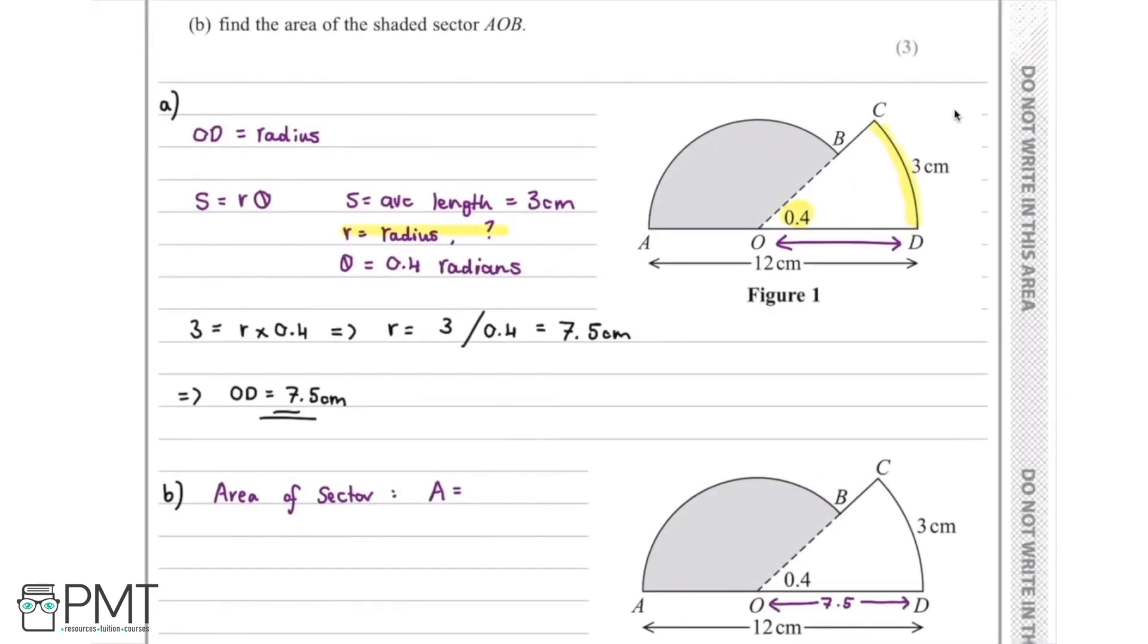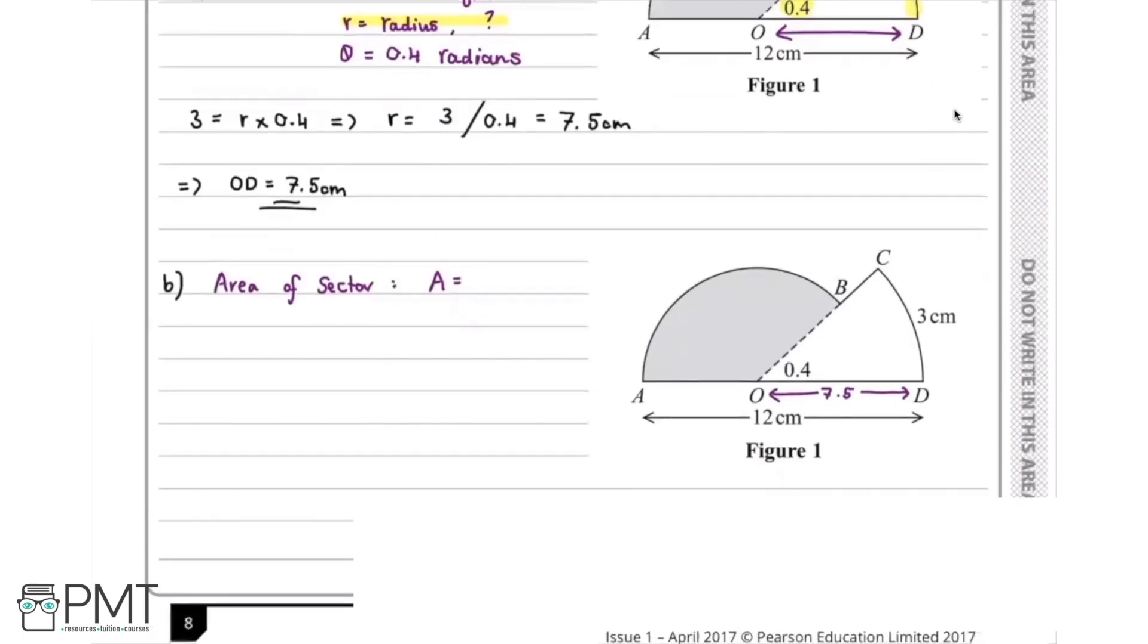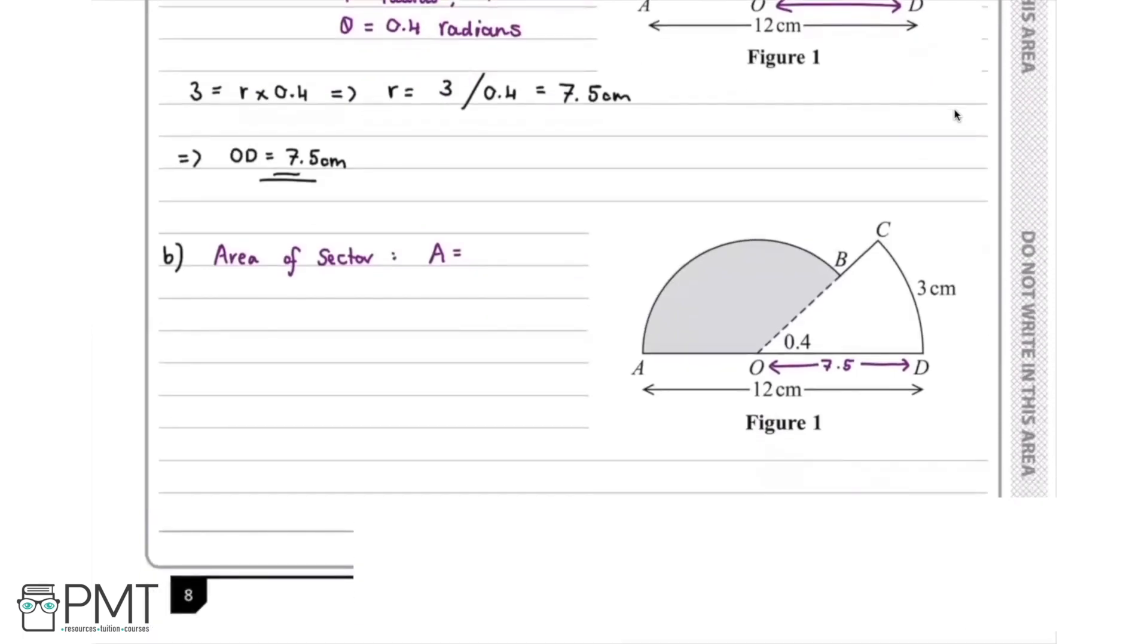Now we'll move on to part (b), where we're asked to find the area of the shaded sector AOB. Once again, to make things easier, we'll copy out the diagram and annotate it as we go. We've been asked to find the area of a sector, so the best thing to start us off will be to write down the formula we know for the area of the sector. The area equals a half multiplied by the radius squared multiplied by theta.